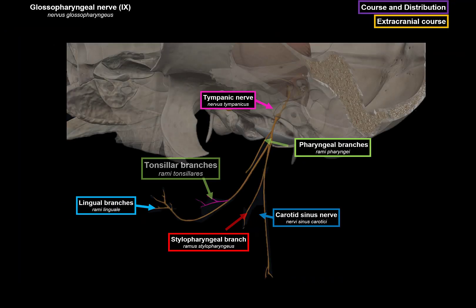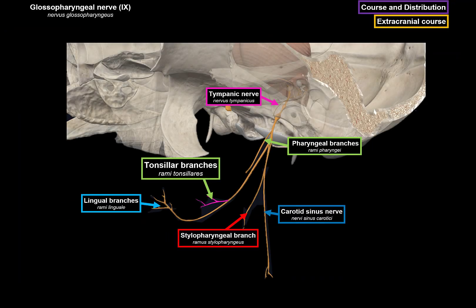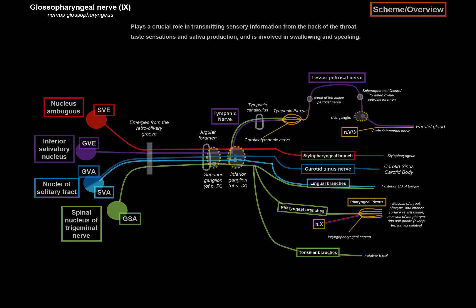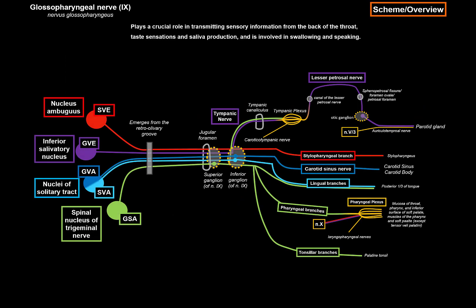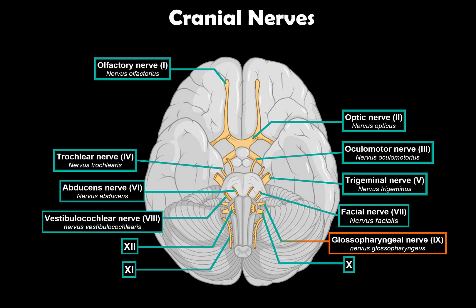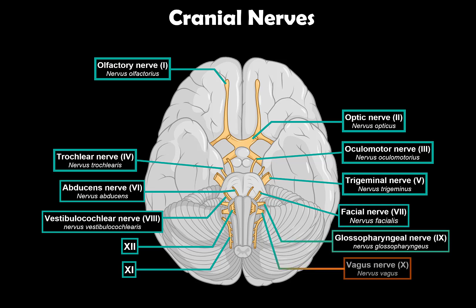That covers everything for the glossopharyngeal nerve. The scheme shown is schematic rather than exactly anatomically correct, but it should help you gain a good understanding of the nerve. We've now covered the glossopharyngeal nerve, and the next video will be about the 10th cranial nerve, the vagus nerve.